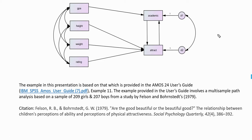The basic model has four exogenous variables: GPA, height, weight, and rating. Two endogenous variables are academic and attract. The academic variable is predicted by GPA only as the exogenous variable, and the attract variable is predicted by the exogenous variables height, weight, and rating, as well as the academic variable.